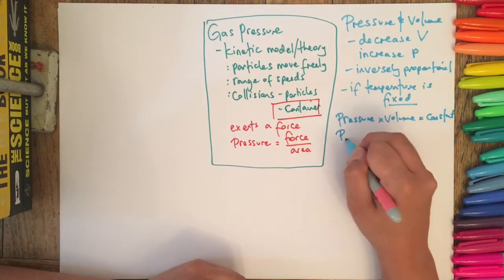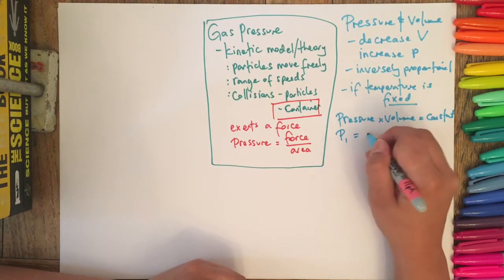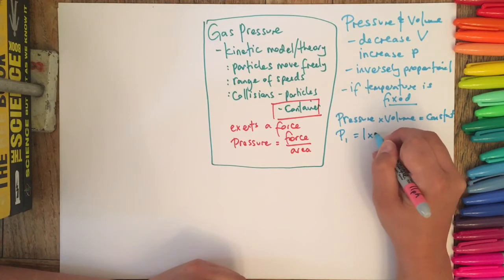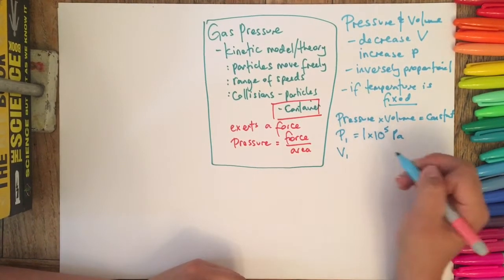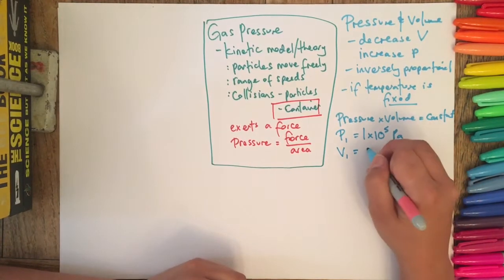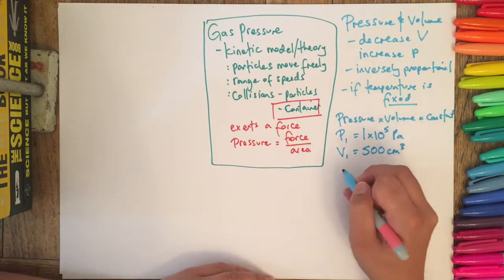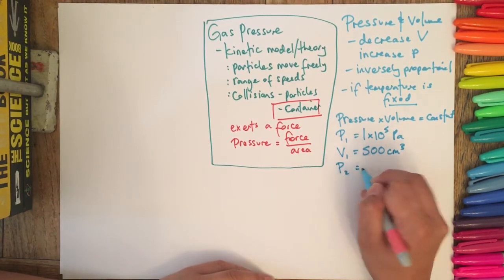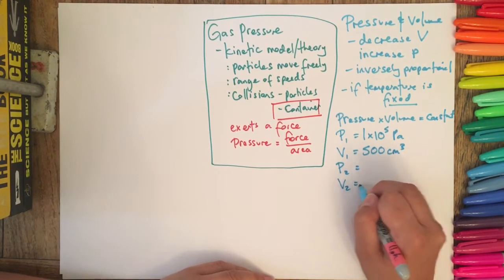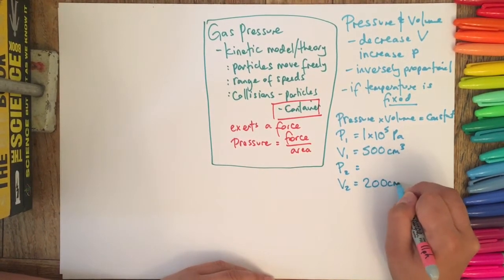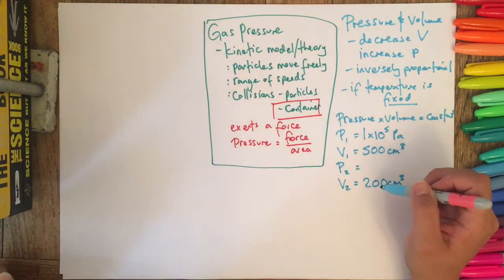So let's do an example and just make up some numbers. If we've got the starting pressure, which I'm just going to call P1, is let's say atmospheric pressure which is 1 times 10 to the 5 pascals. And then we've got a volume which, okay, 500 centimeters cubed. And then let's say that we don't know what the finishing pressure is going to be, but we know that the finishing volume is 200 centimeters cubed.